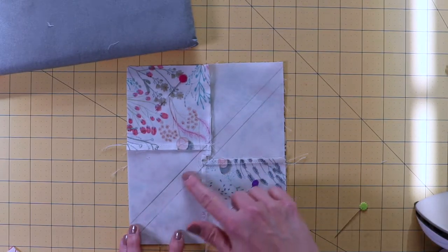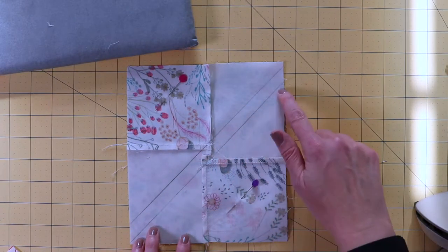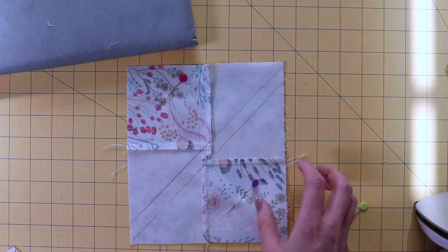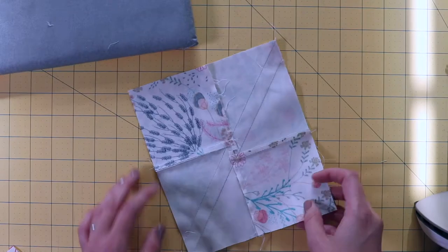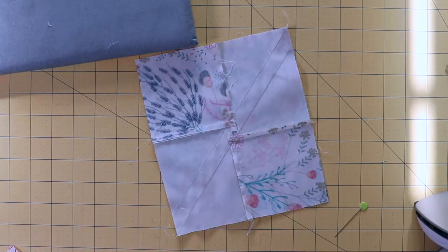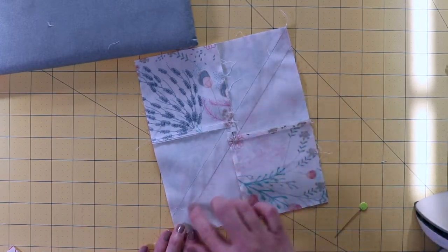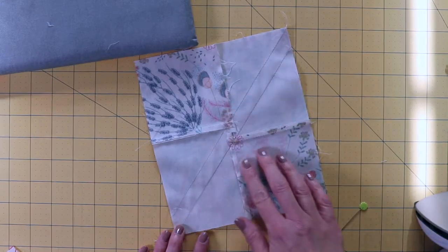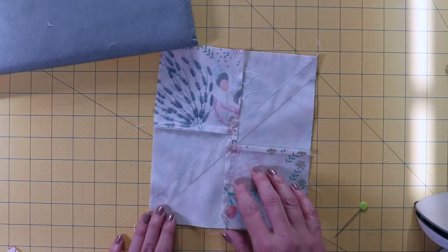And then you're just going to sew on each of the pencil lines. Make sure you stay on the lines though. So I've got that sewn. You can see my stitching lines, maybe not too well, because the thread matches the fabric. But they're there.